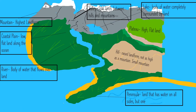The first one is mountains. Mountains are the highest landforms — they're really tall. Next, coastal plain: low, flat land along the ocean.